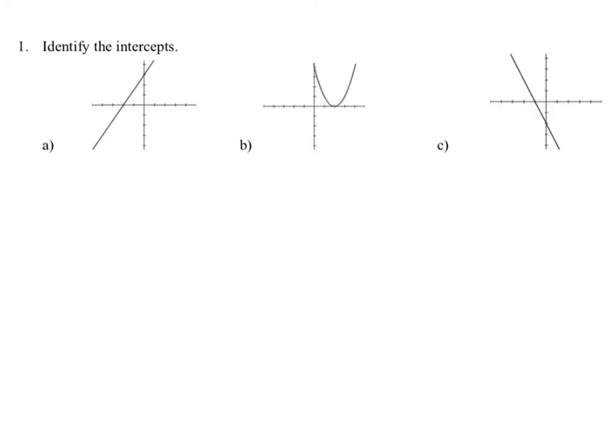In these examples, we want to identify the intercepts. The intercepts are where the graphs cross through the x and y axis. We can identify the x-intercept by locating where the graph crosses this horizontal line. Assuming that every mark here indicates one unit, our x-intercept occurs when x is equal to negative 2 and y is equal to 0.